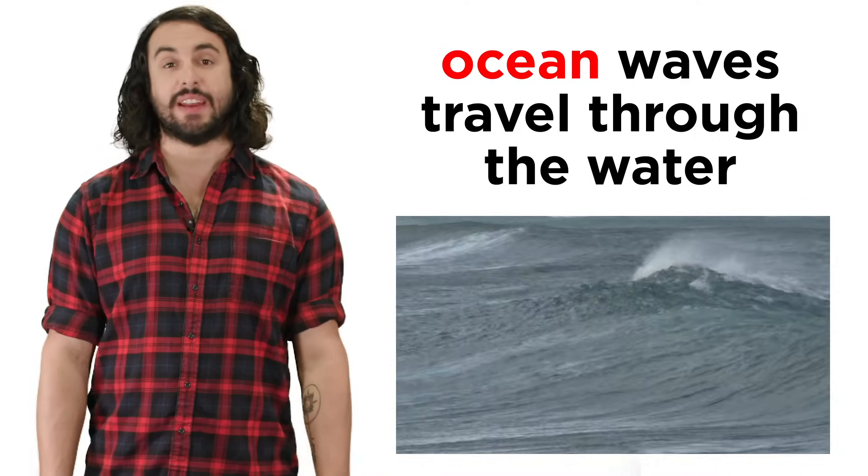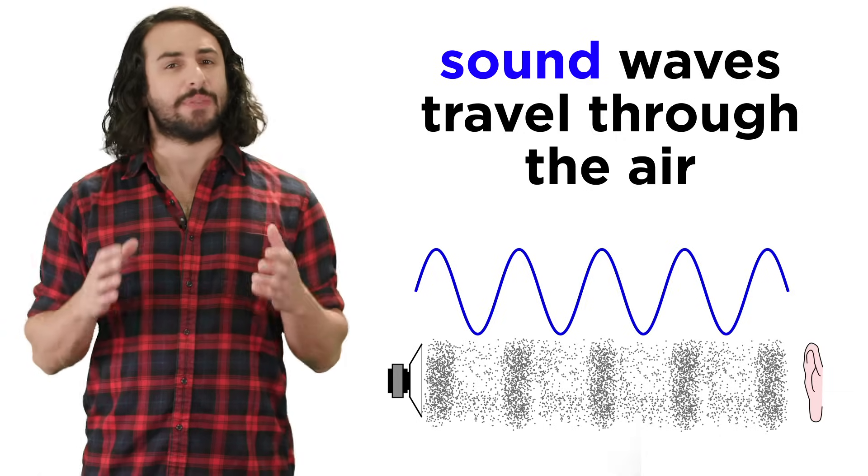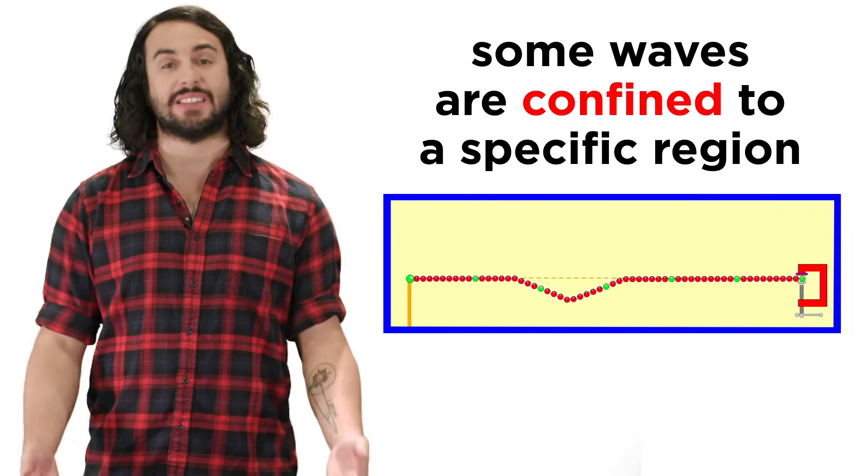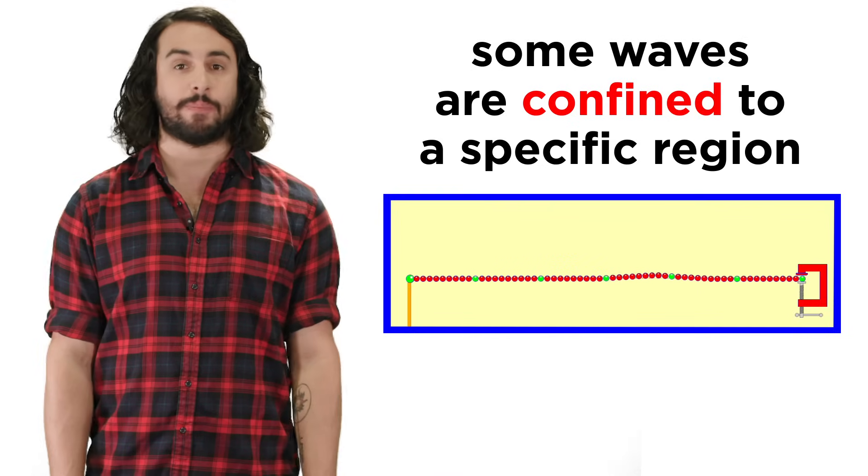Waves in the ocean can travel a great distance, just like sound waves, but some are confined to a specific region, like if you shake a taut rope with one end fixed in space. Waves will travel down this rope and then back again, reflected at the boundary.